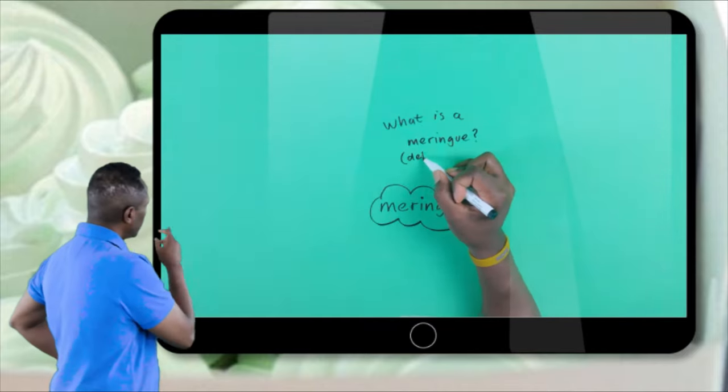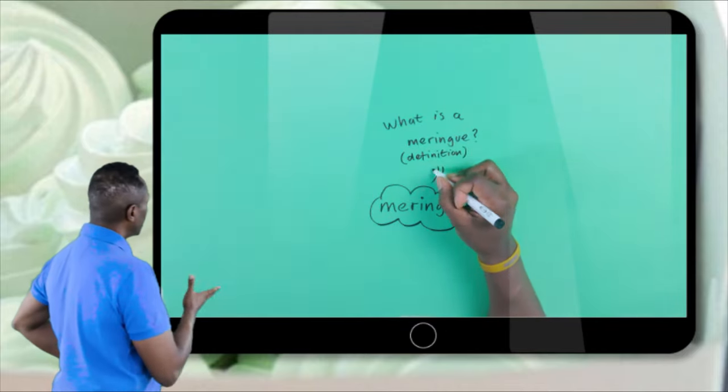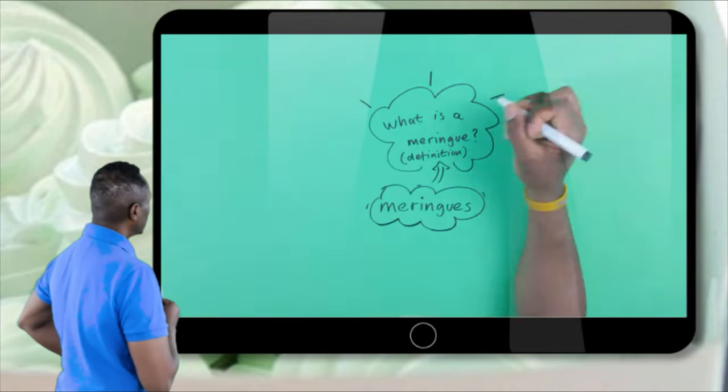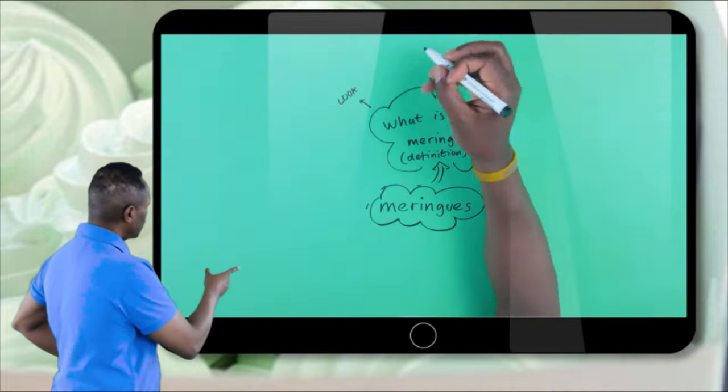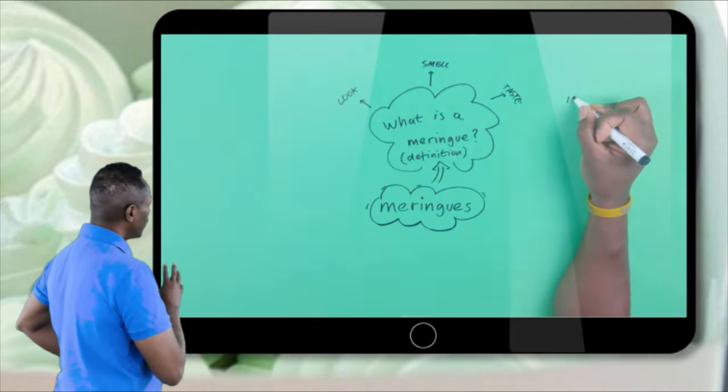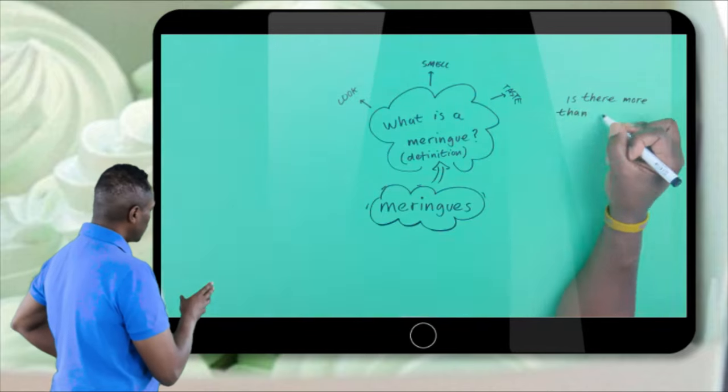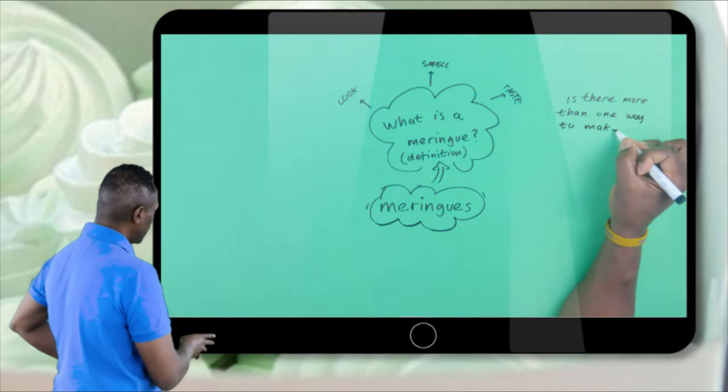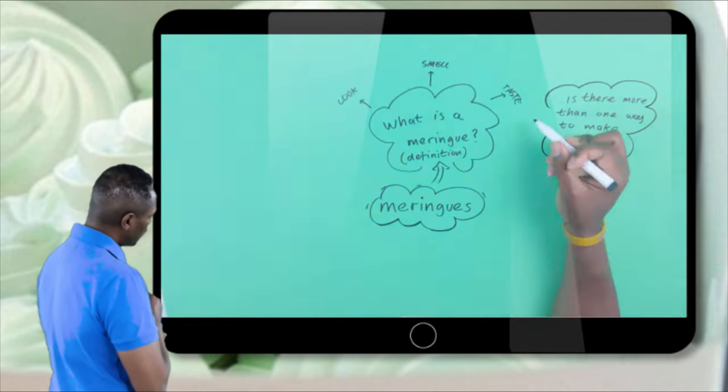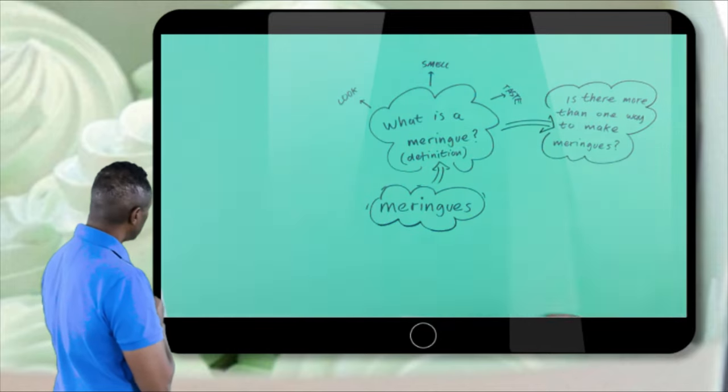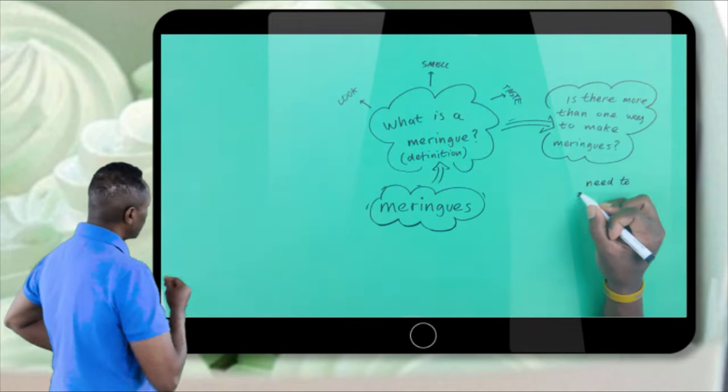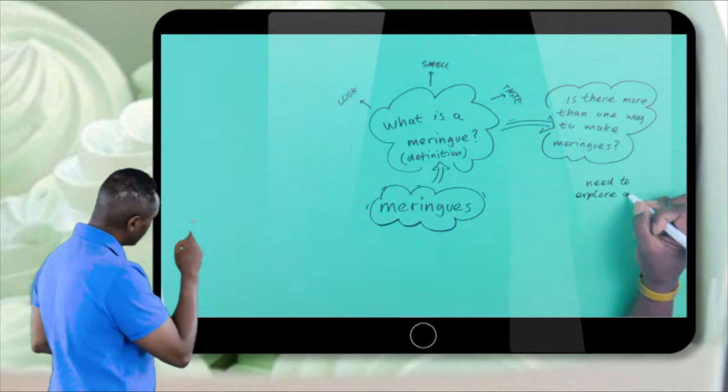After meringues I want to ask myself, what exactly is a meringue? So the first thing I'm going to do when I'm doing my research is find a good definition for what a meringue actually is. I want to find out what they should look like, what they should smell like, what they should taste like. I'm going to investigate meringues or even the different ingredients that make up a meringue. I need to know what a good one should look like. Next, is there more than one way to make a meringue? That's a very important point, so we need to explore different recipes.